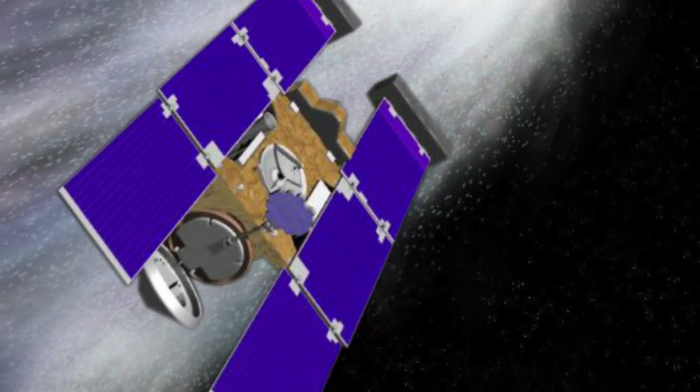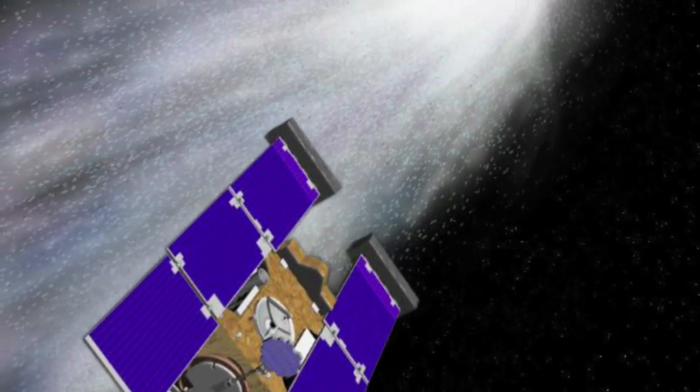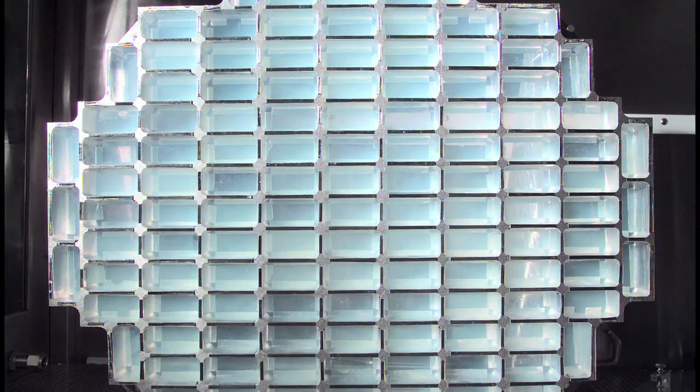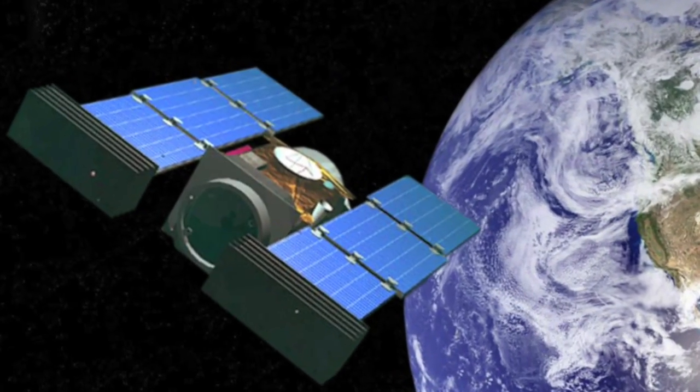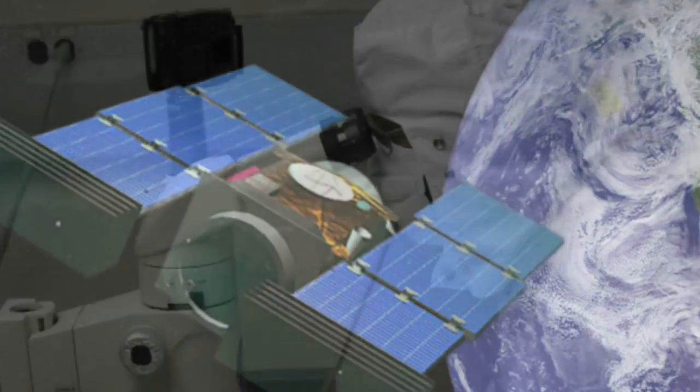NASA's Stardust satellite passed by comet Wild 2 in 2004, and using a high-tech aerogel panel the size of a tennis racket, collected samples of gas and dust from the comet. The samples were sent back to Earth in 2006, and scientists have studied them ever since.